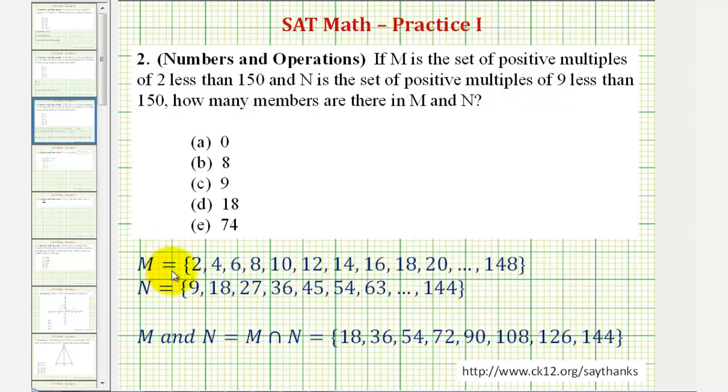So the set M will consist of all the numbers or members listed here. Notice how we have multiples of two, but we stop at 148 because the next multiple of two would be 150, which is not less than 150. And then for the multiples of nine, we stop at 144 because the next multiple of nine would not be less than 150.